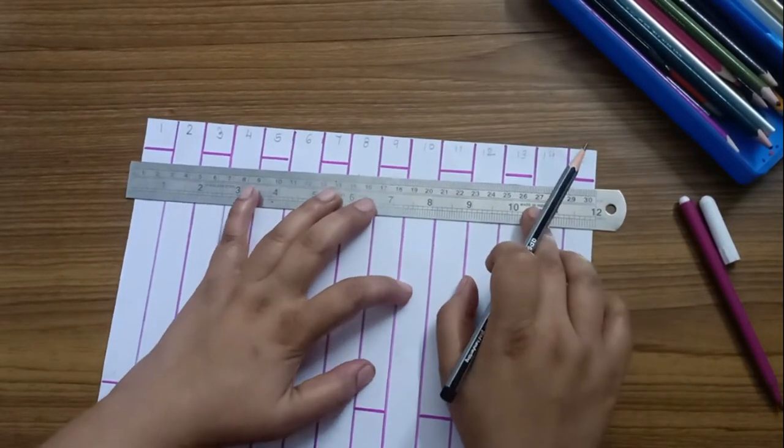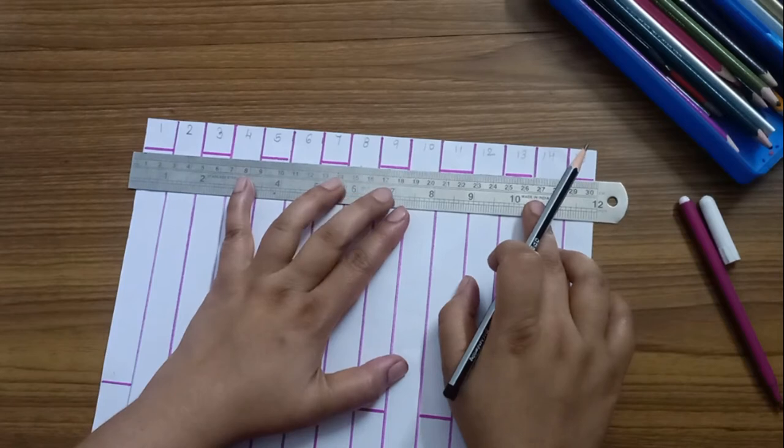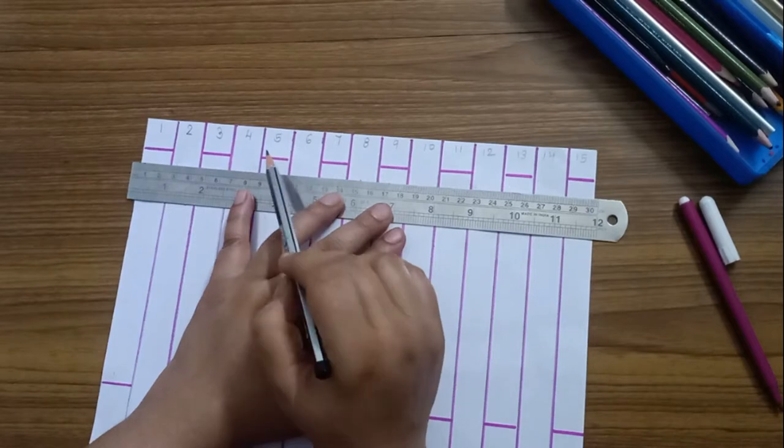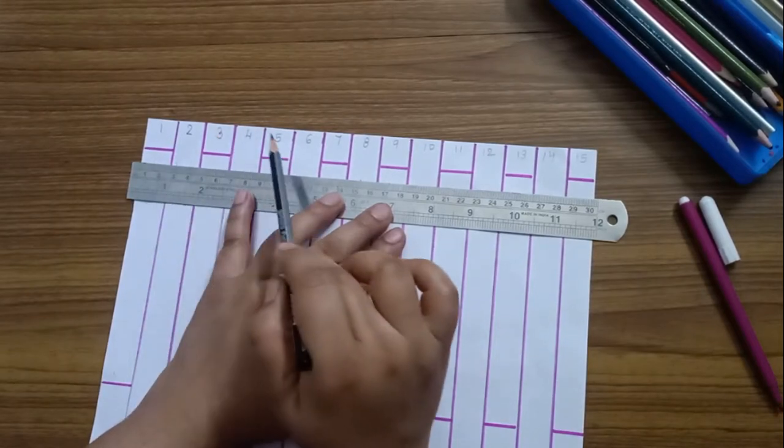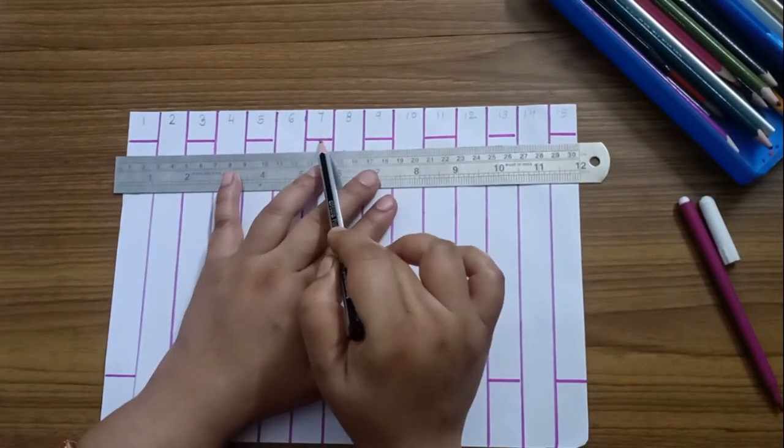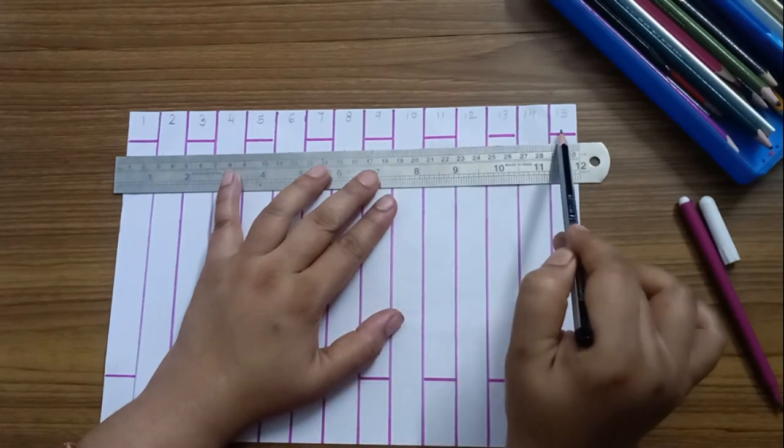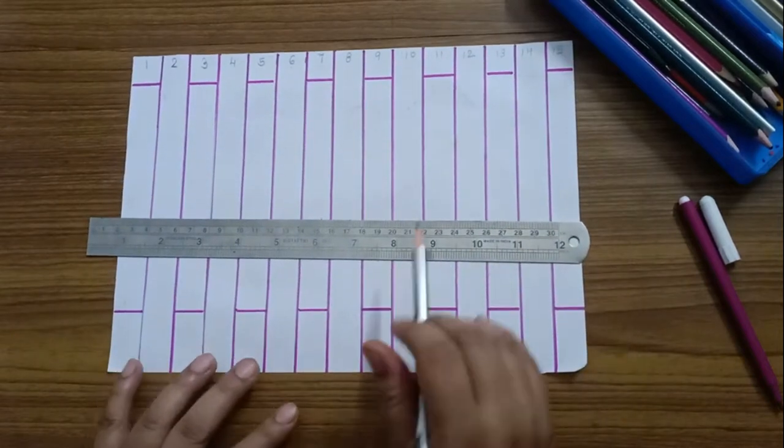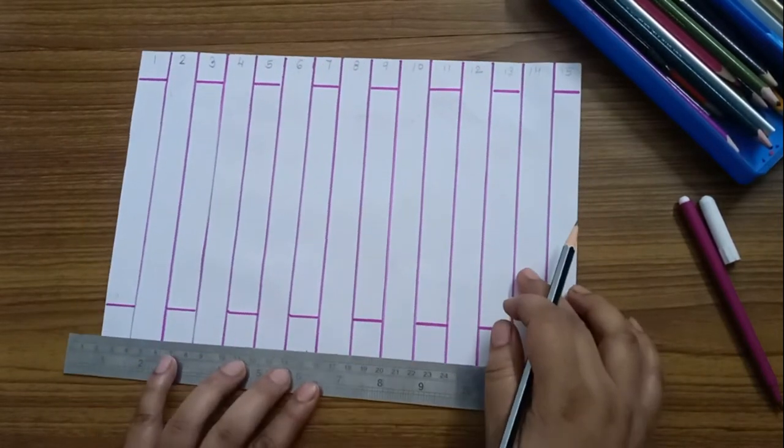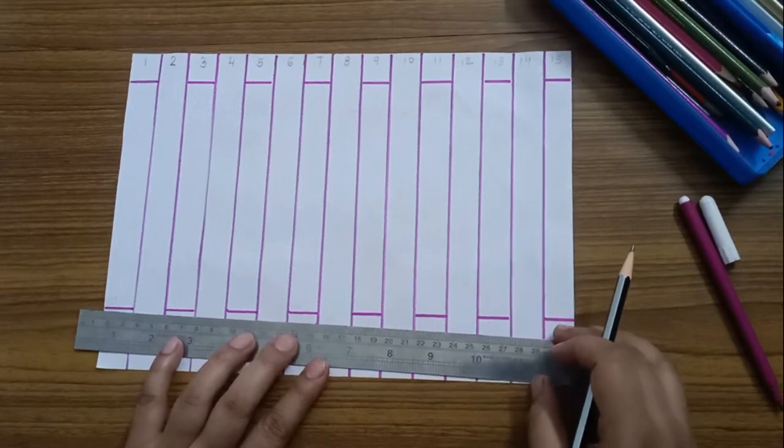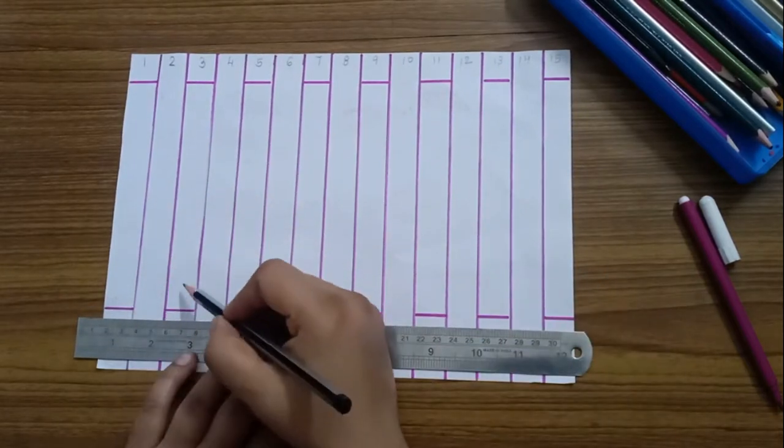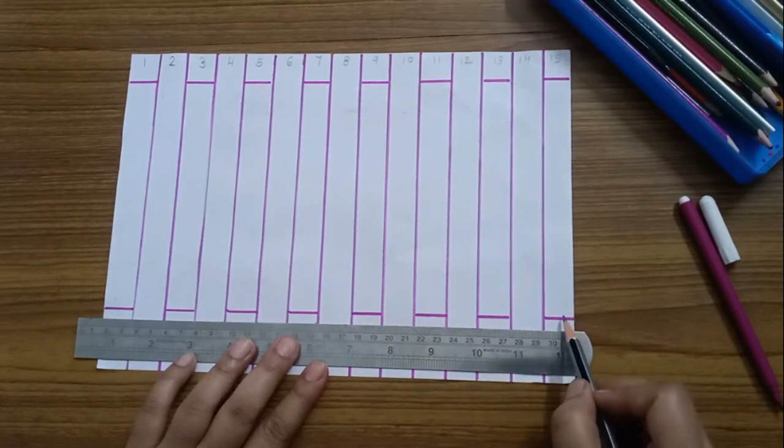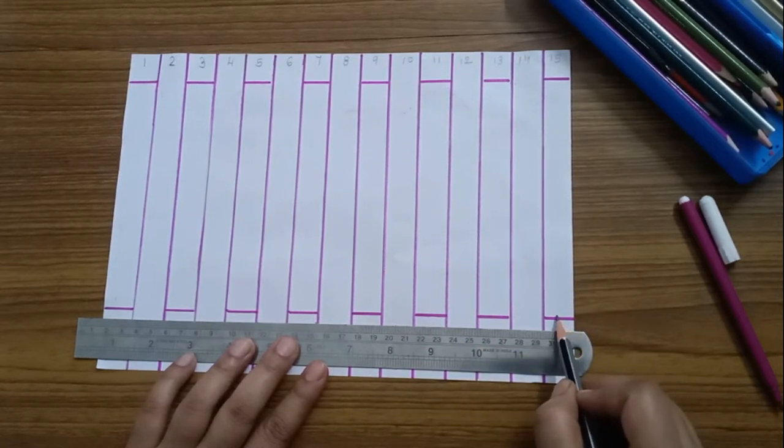Now, draw a line below every odd number like 1, 3. I have already drawn it. You can see 1, 3, 5, 7, 9, 11, 13 and 15. Same at the bottom of the page also. Leave some space and then draw a line like 1, 3, 5, 7, 9, 11, 13 and 15.